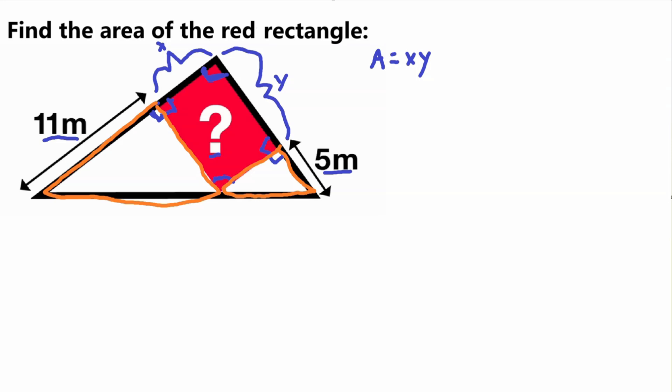Let's see if these triangles are similar. To be similar, they need to have the same corresponding angles. We can see they already share the right angle, which is good. We need to prove that these other angles are the same. I'm going to name this angle G, so we need to prove that G equals G.